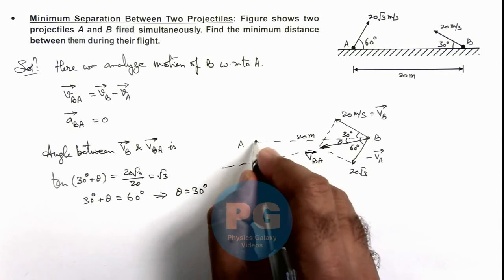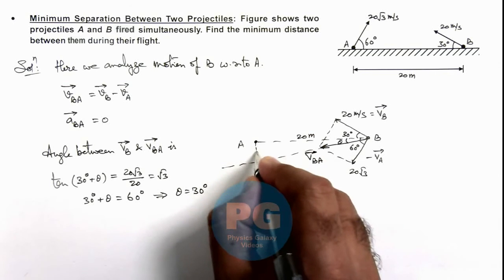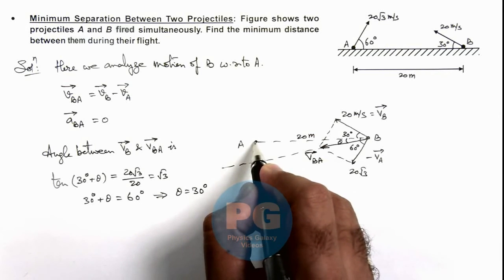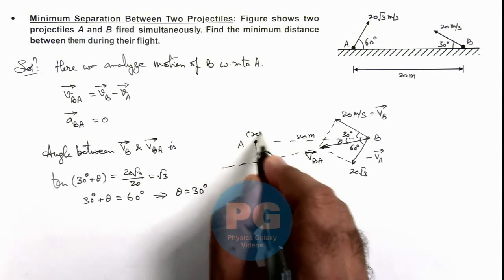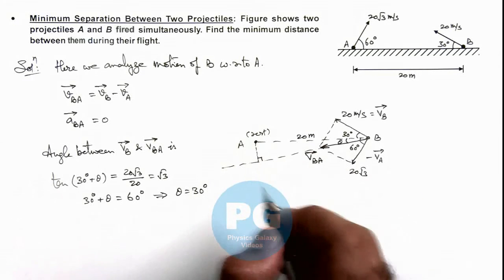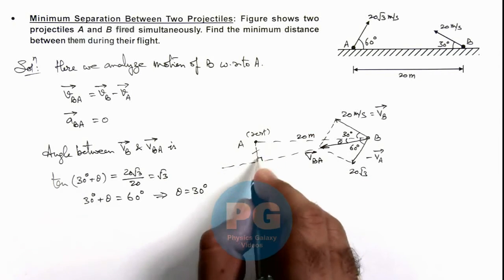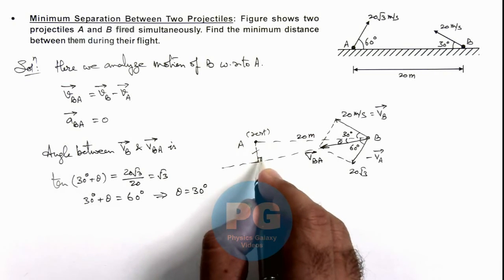Then the shortest distance between A and B can be calculated by dropping a perpendicular from position of A, because we are taking A at rest since we are analyzing the velocity of B with respect to A. This is the minimum distance between particles A and B during their projectile motion.